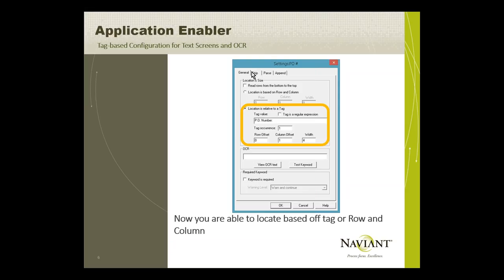This enhancement applies to text screens and any screens configured using the OCR option, and is supported with AE Live in addition to the standard Application Enabler screen. You can see the new tag-based options in the keyword configuration screen. It works similarly to tag-based DIP — you define a tag as a piece of text that's never going to change but can occur anywhere on the screen. Whenever App Enabler finds that specific text, it knows the keyword is going to occur immediately after it, making configuration easier since you don't need columns and rows.